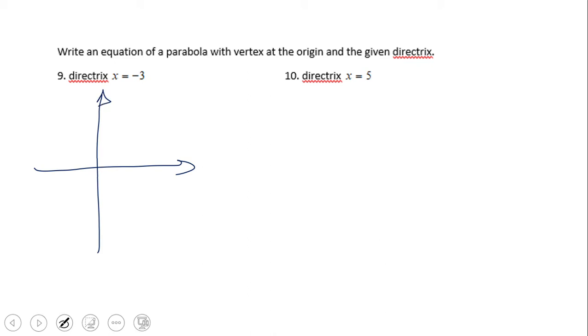This problem is very similar. The only difference: we have the directrix given. The vertex is at the origin, and the directrix is x equals negative 3. So 1, 2, 3, this is the directrix. So basically now we know we have a sleepy parabola. And again, c is also the distance from the directrix to the vertex. So similar with the other problem, we have x equals 1 over 12 y squared.